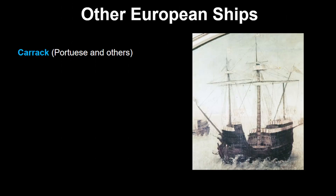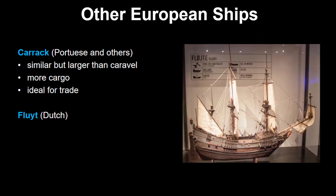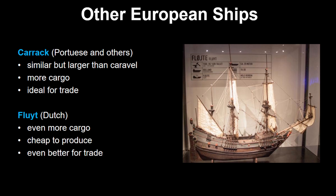The Carrack was similar to the Caravel but was larger and more suitable for travel and trade, since it could carry more goods and people. In later years, the Dutch developed the Flute, which could carry even more cargo and was relatively cheap to produce, making it even more ideal for trade.